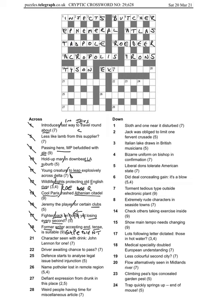21 across: character with scene with drink, John Lennon for one. The drink is going to be port, and a character, if you have the character of something, the air of something, it's going to be AIRPORT. John Lennon Airport in Liverpool, that's certainly one. Then 22 across: driver awaiting chance to pass. This isn't pass as in overtake, it's actually taking your test, so that driver would be a LEARNER.